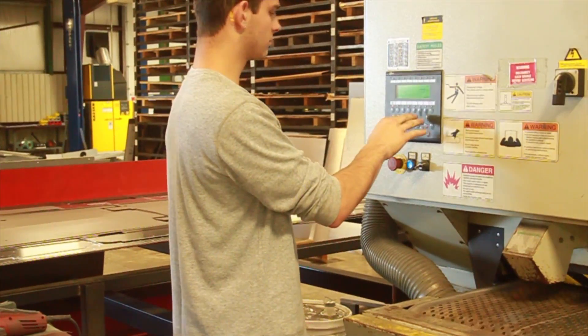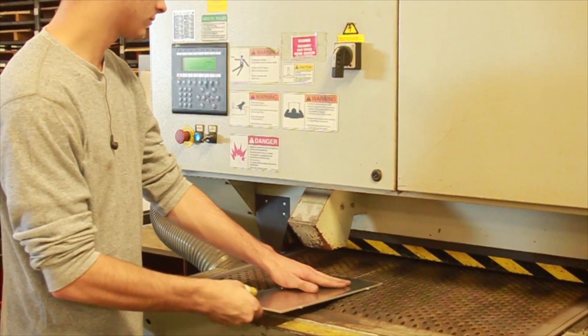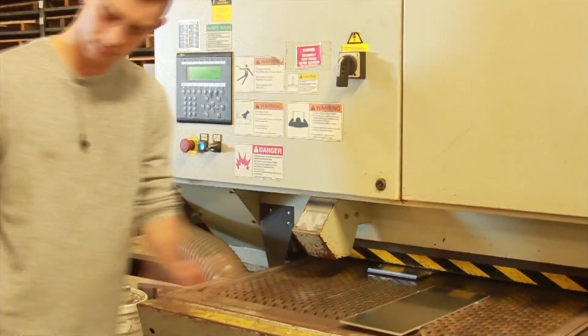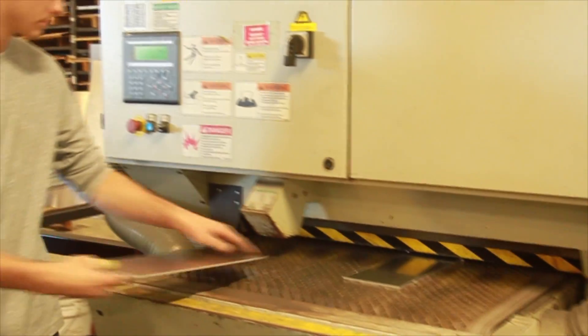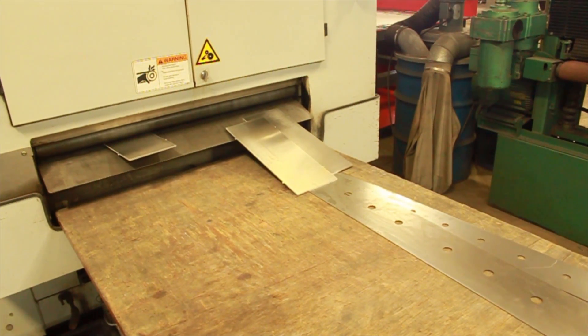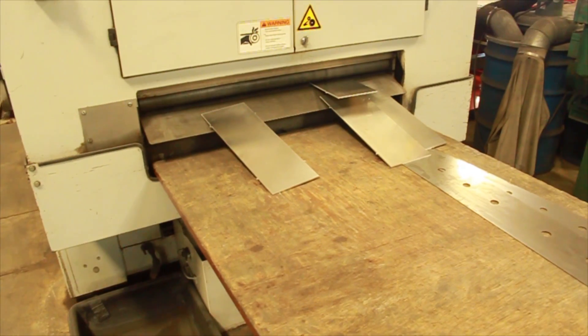One downside to laser cutting is the small but sharp burr that can be left on the part. This is easily fixed by running each piece through a large sander. This removes the burr, leaving a smooth finish on the entire part.